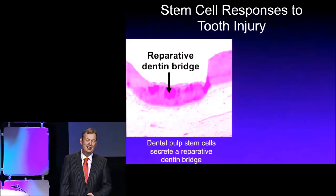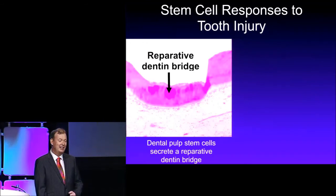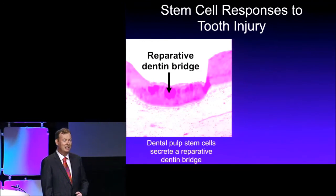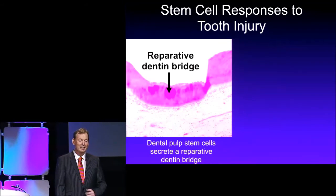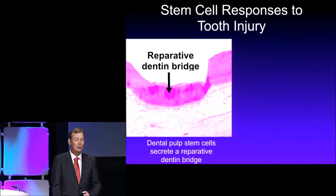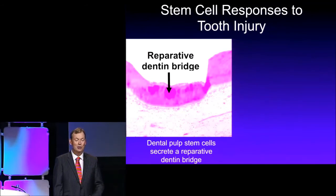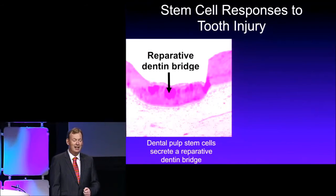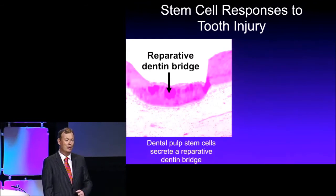When we see images like this, what we can see is a vital pulp. This reparative dentin bridge is covering the site of a pulp exposure. What you can see there is a healthy pulp — it's not filled with immune cells, there's no bacteria. And so that's a very good healing pulp exposure.